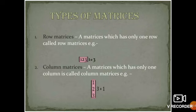Column matrices: a matrix which has only one column is called a column matrix. For example, the column of the matrix is 1. The order of the matrix is 3 by 3.